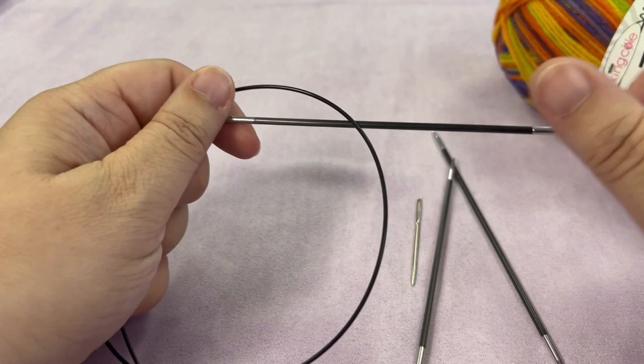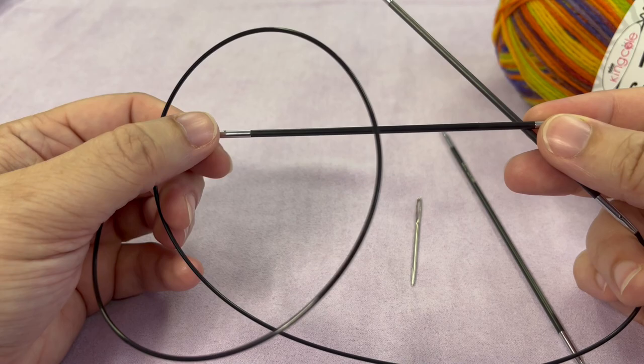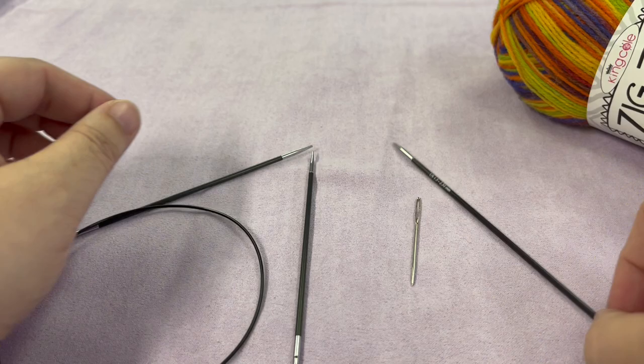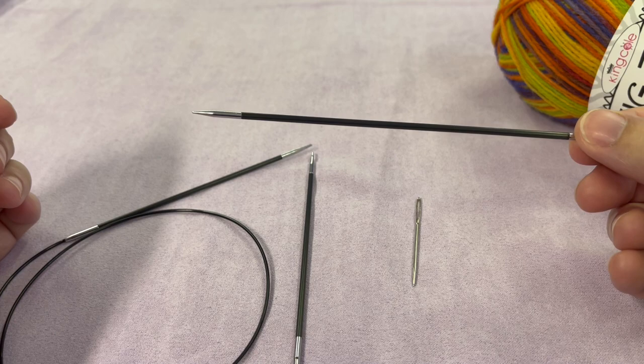You're also going to need circular needles. We are going to be doing the magic loop technique. These ones are a 2.5 millimeter needle and the cord length is 32 inches.